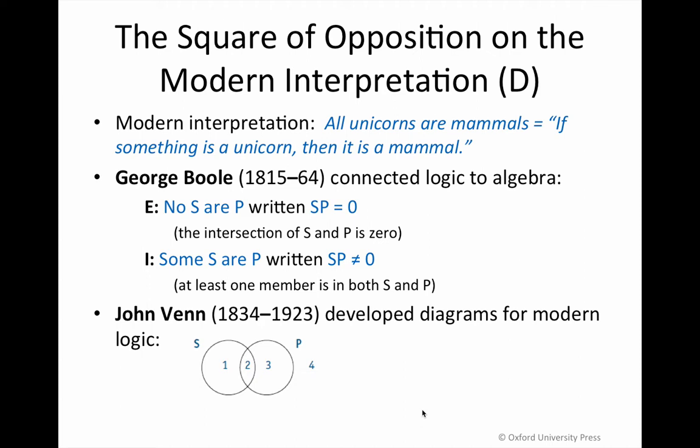We're not saying that any unicorns actually exist, but if there were to be, then this is how it would look. Take a look at the two overlapping circles at the bottom of the screen. The S circle represents the subject class and the P circle represents the predicate class of a categorical proposition. The numbered areas are those areas that we can diagram in specific ways in order to visually represent the logical structure of a claim. In the case of 'all unicorns are mammals,' we're going to diagram a part of the S circle as it relates to the distribution of S's into the P class.